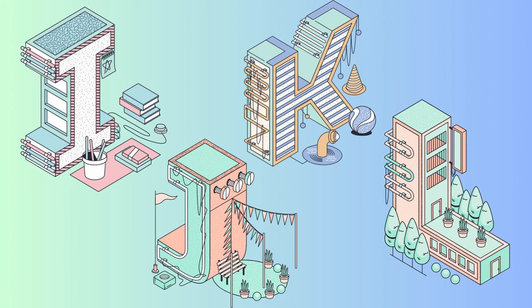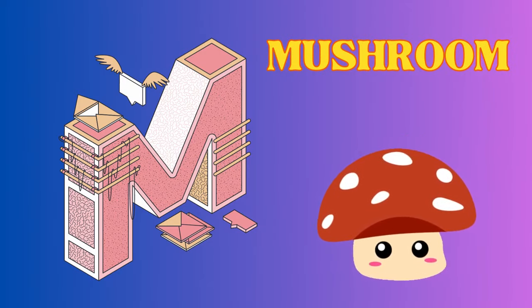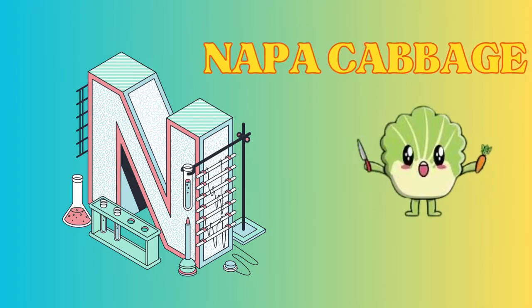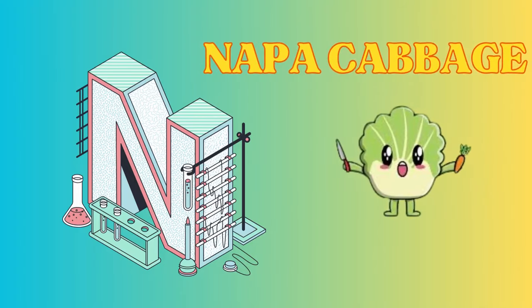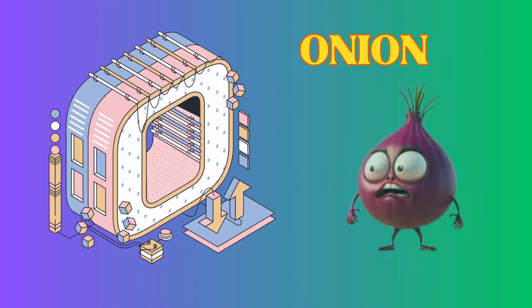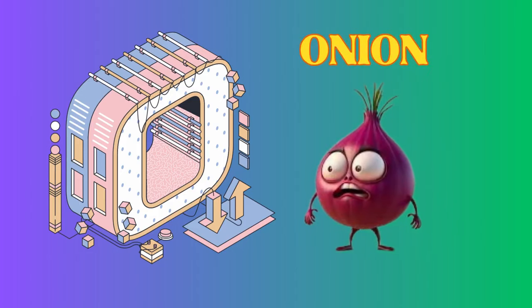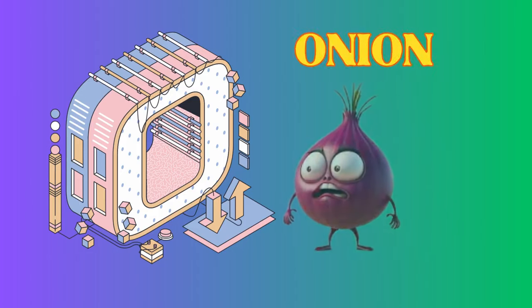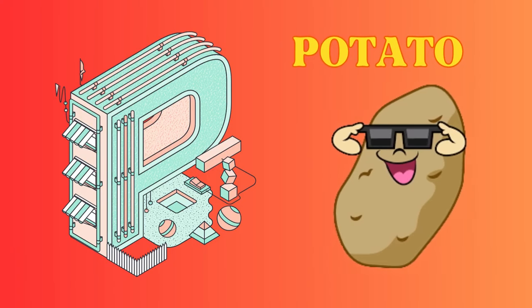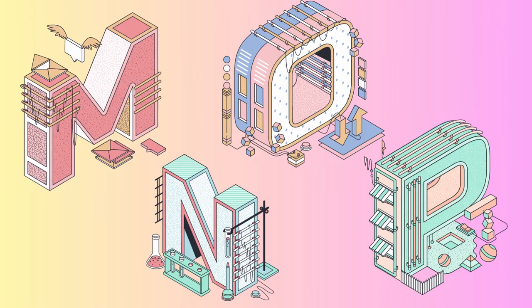M is for mushroom, mushroom. N is for napa cabbage, napa cabbage. O is for onion, onion. P is for potato, potato.